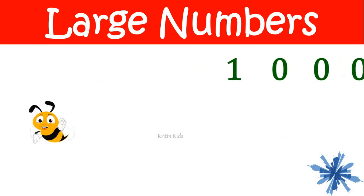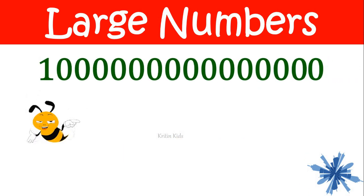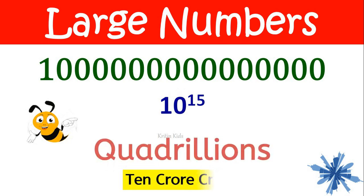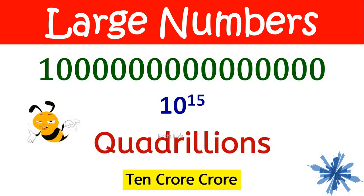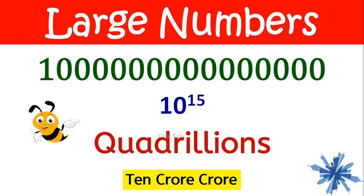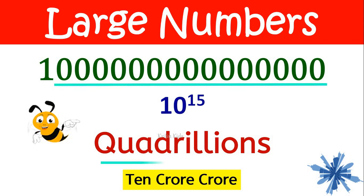Now let's add one more zero — this becomes one quadrillion, that is ten crore crore. One followed by fifteen zeros is one quadrillion.